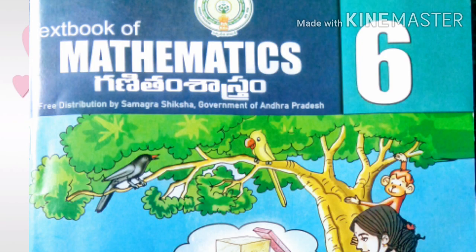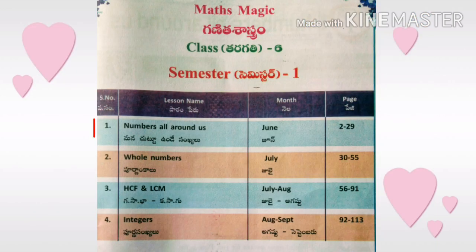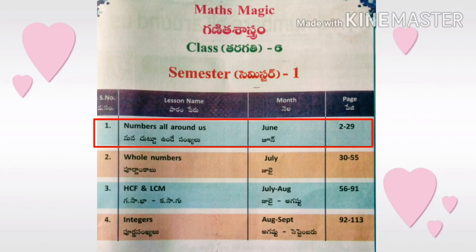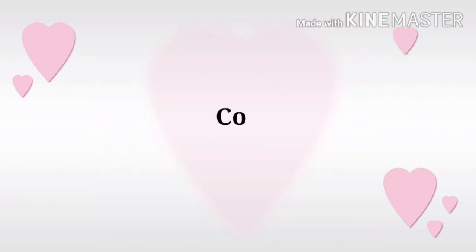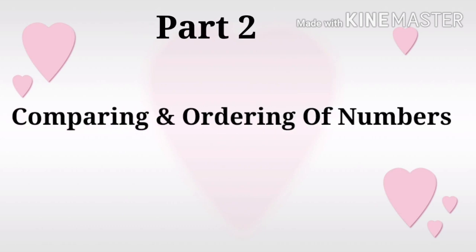Welcome to Shaker Mess. Today we are going to learn sixth class mathematics, semester 1, Numbers All Around Us, Part 2: Comparing and Ordering of Numbers.